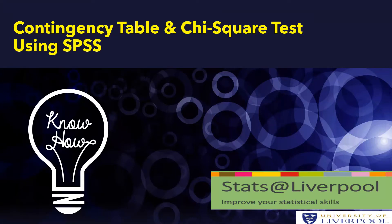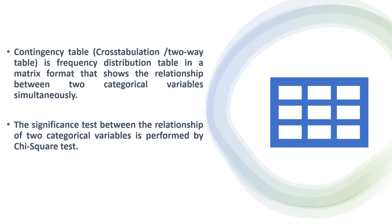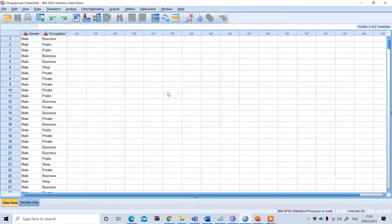A contingency table — also called a cross-tabulation or two-way table — is a frequency distribution table in a matrix format that shows the relationship between two categorical variables simultaneously. A significance test for the relationship between two categorical variables is performed using the chi-square test.